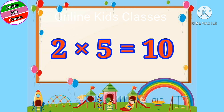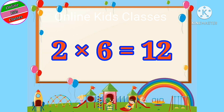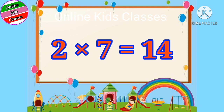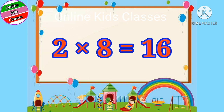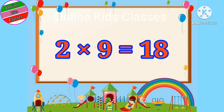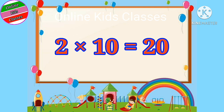Two fives are ten. Two sixes are twelve. Two sevens are fourteen. Two eights are sixteen. Two nines are eighteen. Two tens are twenty.